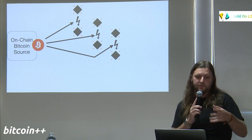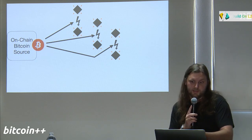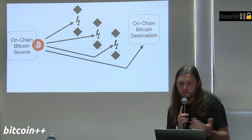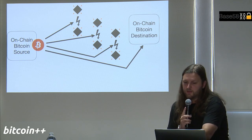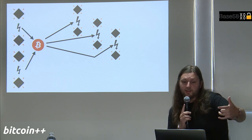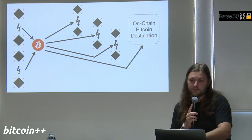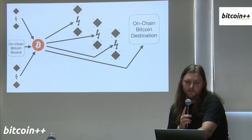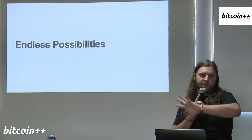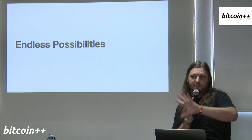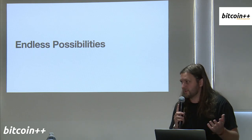Some other examples: you could take your on-chain balance and splice it into three channels at the same time, and also make an on-chain payment simultaneously. You could go from two lightning channels to three and throw in an on-chain destination. The point is you can do a lot of things — there are almost endless ways you can combine these together.